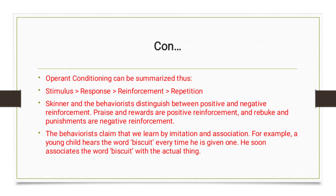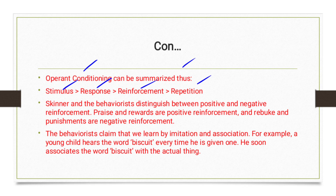Operant conditioning can be summarized as: stimulus, response, reinforcement, and repetition. Skinner and the behaviorists distinguish between positive and negative reinforcement. Praise and rewards are positive reinforcement; rebukes and punishments are negative reinforcement. The behaviorists also claim that we learn by imitation — BF Skinner claims we learn by imitation and association.